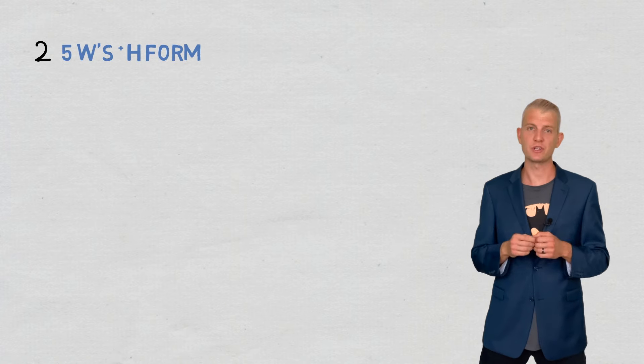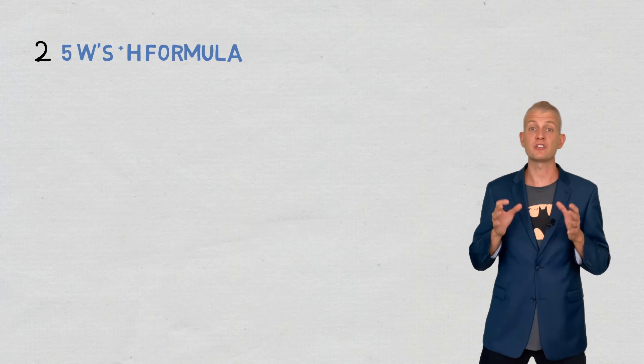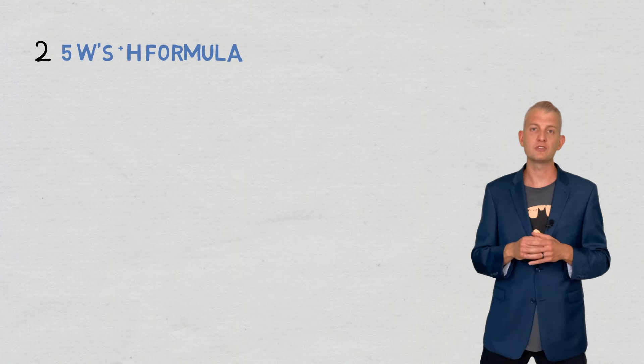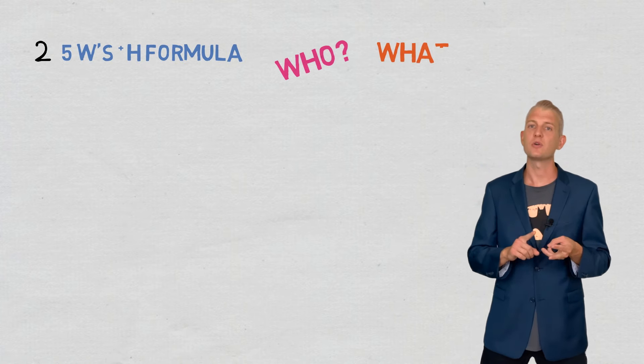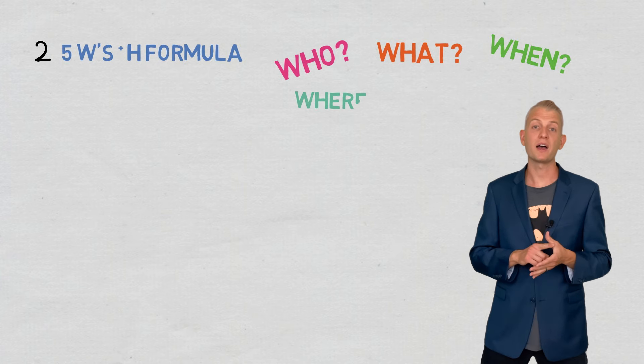Step two, let's talk about the secret formula I mentioned earlier. In order to explain the basic information on your topic, you want to use a five W's plus an H. What's that? Who, what, when, where, why, and how.